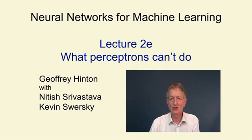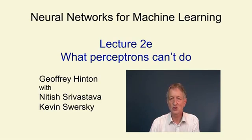In this video, we're going to look at the limitations of perceptrons. These limitations stem from the kinds of features you use. If you use the right features, you can do almost anything. If you use the wrong features, they're extremely limited in what the learning part of a perceptron can do. And that's what caused perceptrons to go out of favour. It emphasises that the difficult bit of learning is to learn the right features.